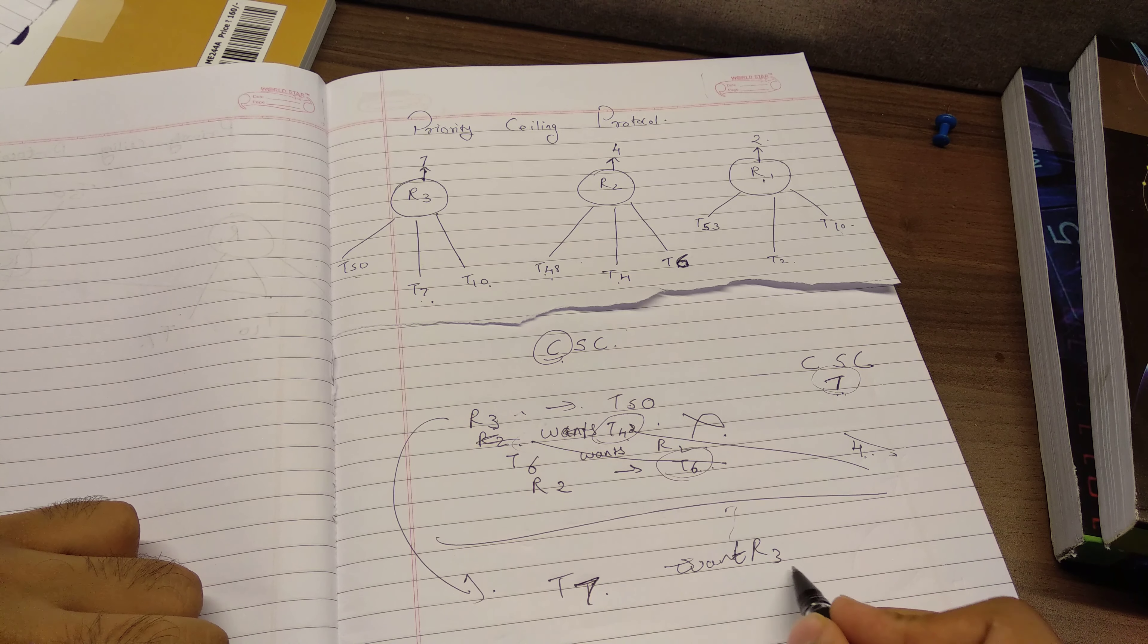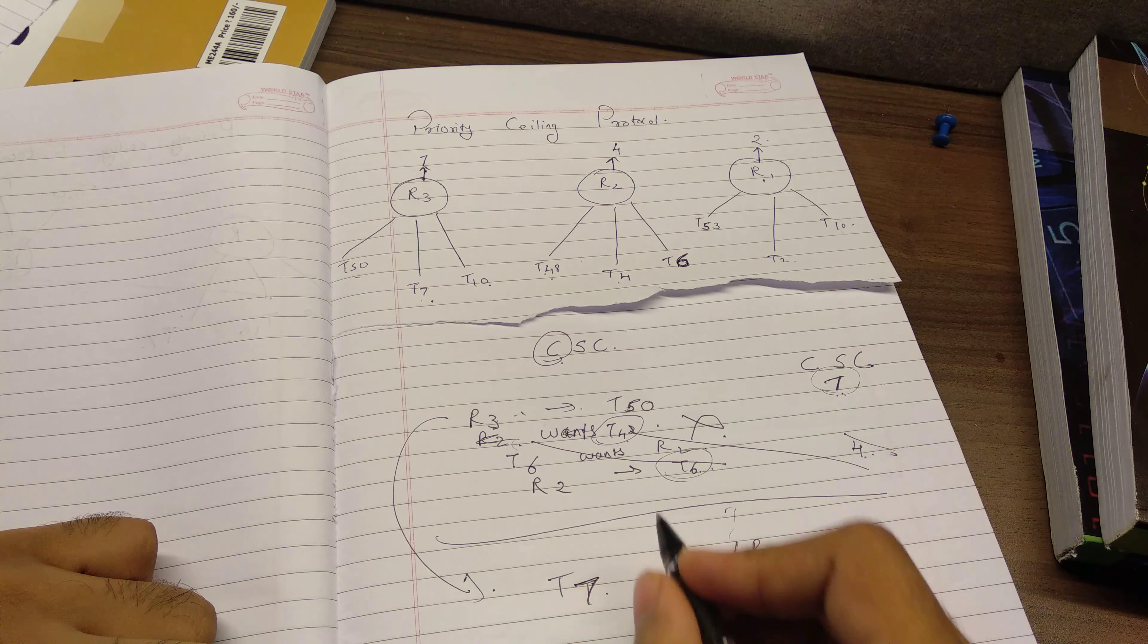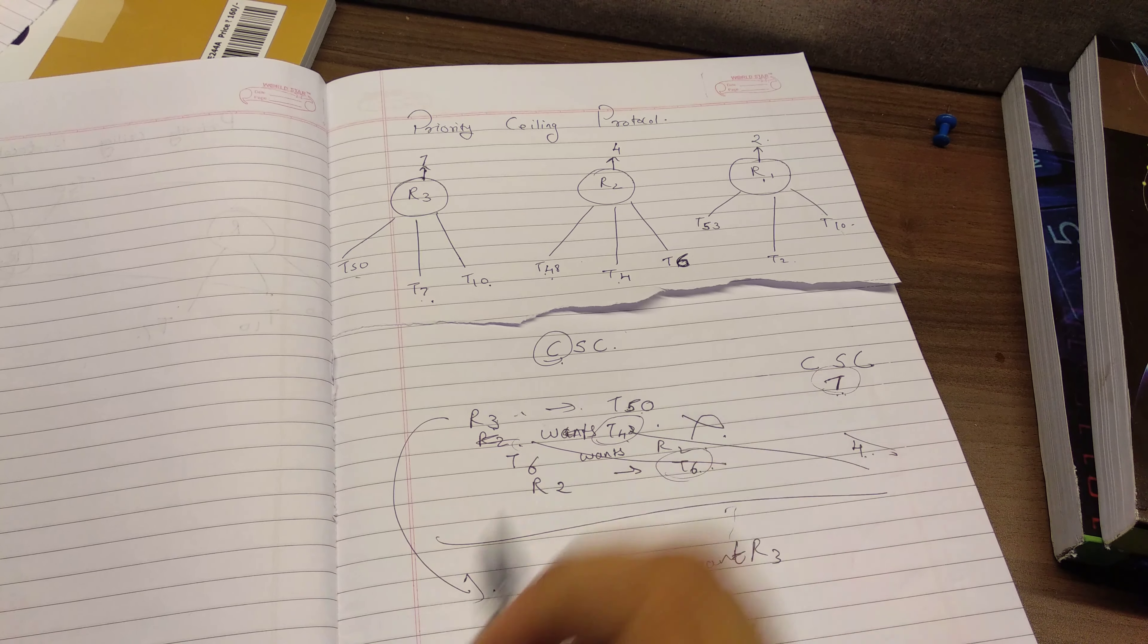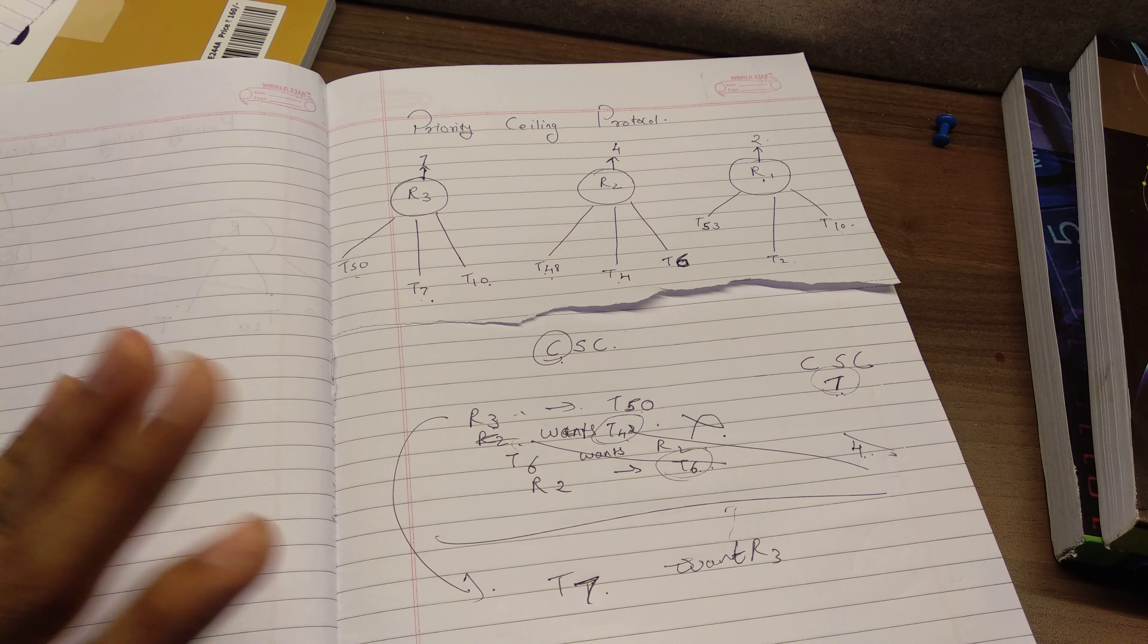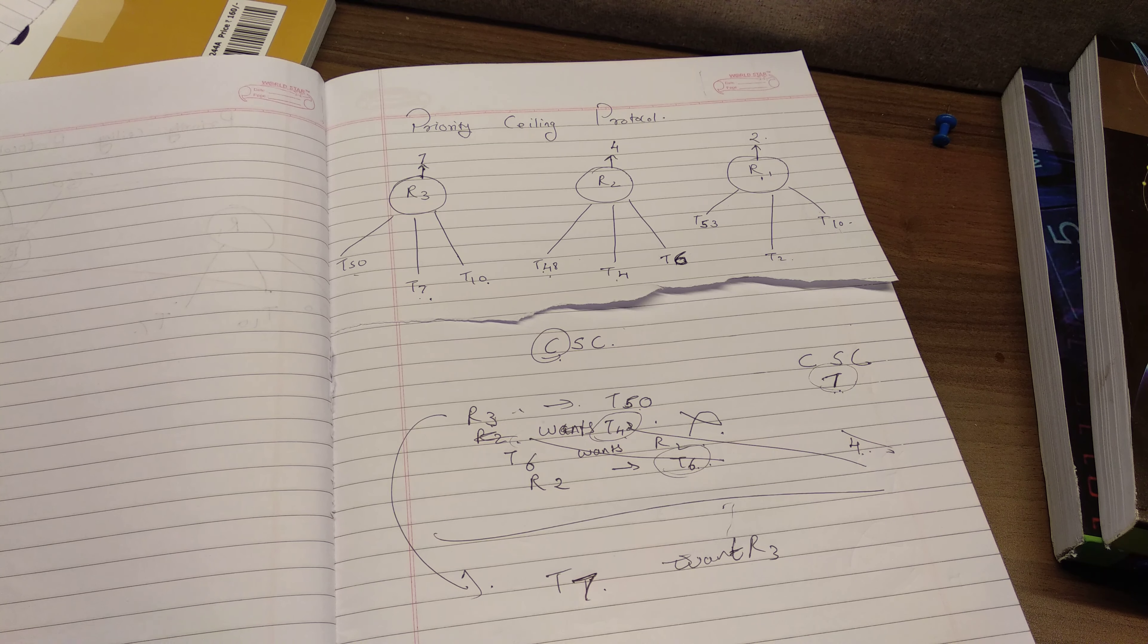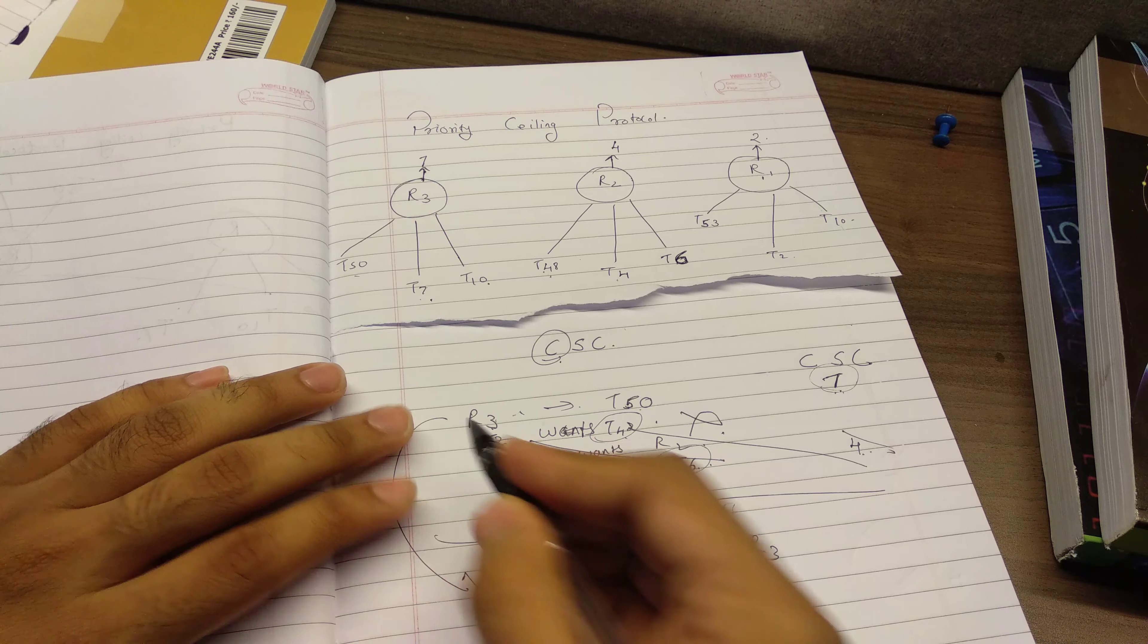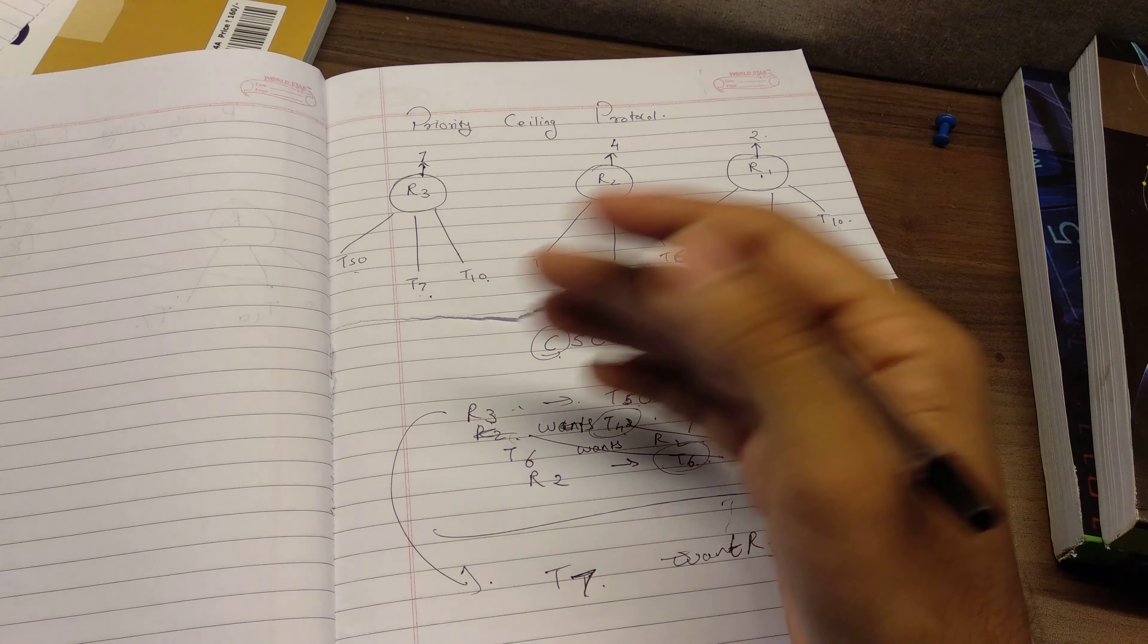So T7 will not be granted R3, but here now T50 will be given the priority, like direct priority inheritance. You can say T50 will be given the priority of T7 and any other task that is lower than the priority of T7 will all be held off until T50 releases the resource R3 and T7 gets it. So this is how even inheritance works in priority ceiling protocol.